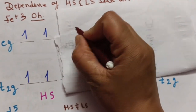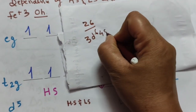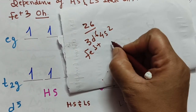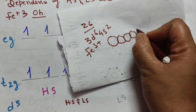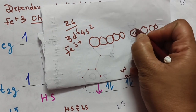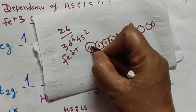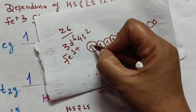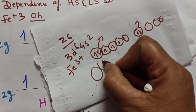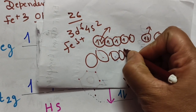Iron has atomic number 26, with configuration 3d⁶ 4s². For Fe³⁺, we remove three electrons — first the two 4s electrons, then one 3d electron — leaving five unpaired electrons in 3d. So Fe³⁺ has a d5 configuration with five unpaired electrons.